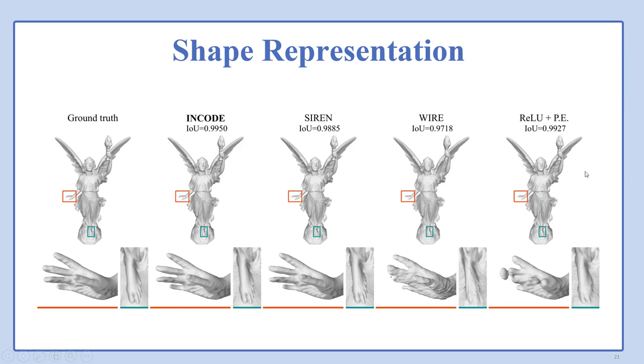In shape representation, ENCODE proves to be a robust and advanced choice in occupancy tasks. It effectively leverages latent codes to enhance the composer network's representation capacity, intensifying both high and low-frequency information.